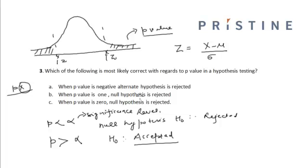When p value is 1, the null hypothesis is rejected. If p value is 1, then p is definitely greater than alpha, because the maximum value which p can attain is the entire area under a normal curve, standardized normal curve, and that is equal to 1. So in that case the null hypothesis will be accepted.